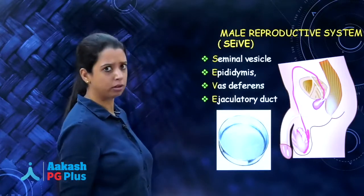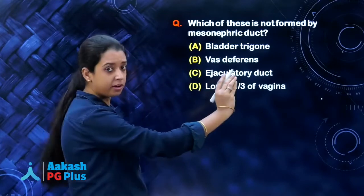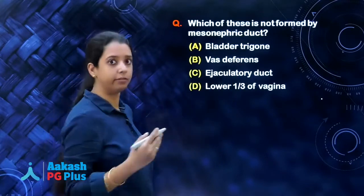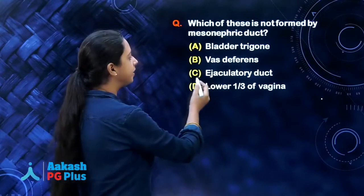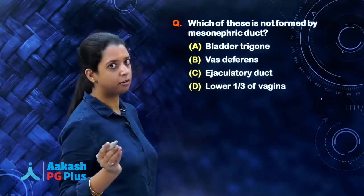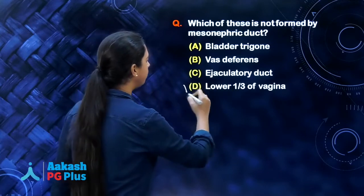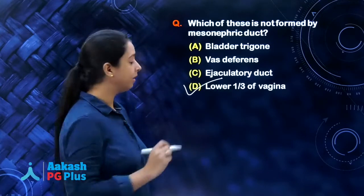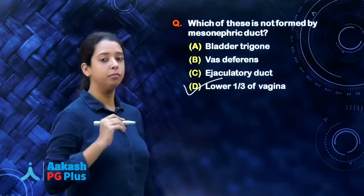Let us get back to the question: which of these is NOT formed by the mesonephric duct? Bladder trigone — of course it forms that. Vas deferens and ejaculatory duct — definitely, it forms those. It does not form the lower one third of the vagina. So, what is it that forms the vagina?